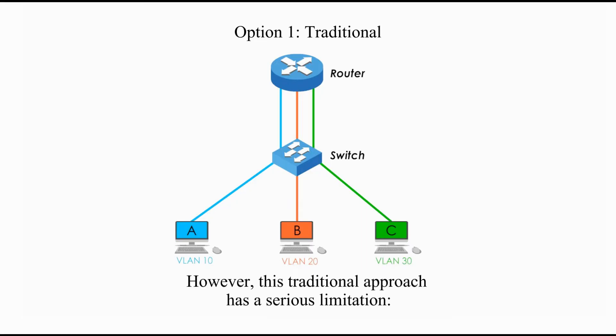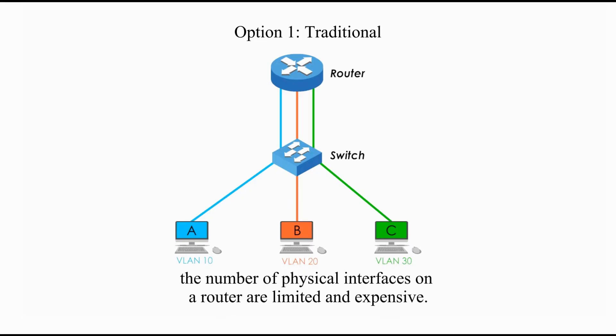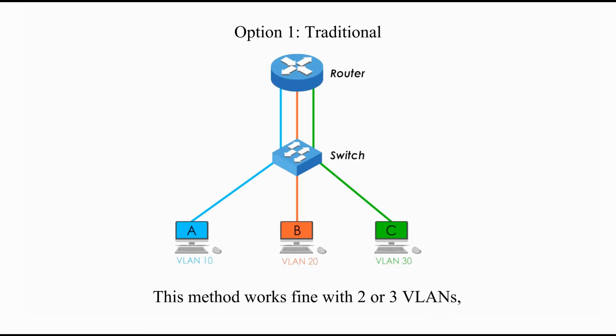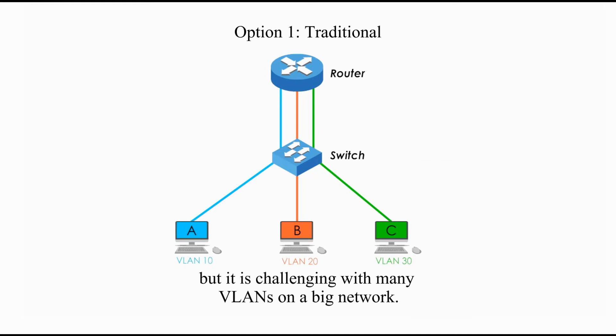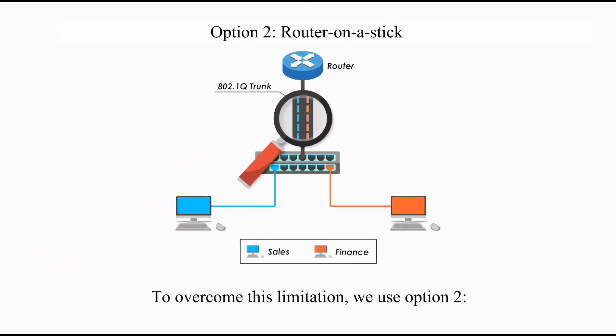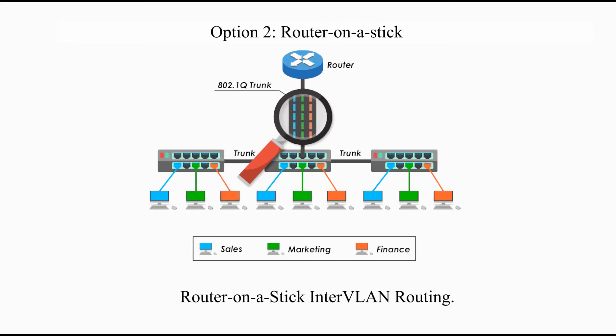However, this traditional approach has a serious limitation. The number of physical interfaces on a router are limited and expensive. We need a separate cable going from the switch to the router for every single VLAN. This method works fine with two or three VLANs, but it is a challenge with many VLANs on a big network. To overcome this limitation, we use Option 2: router-on-a-stick inter-VLAN routing.